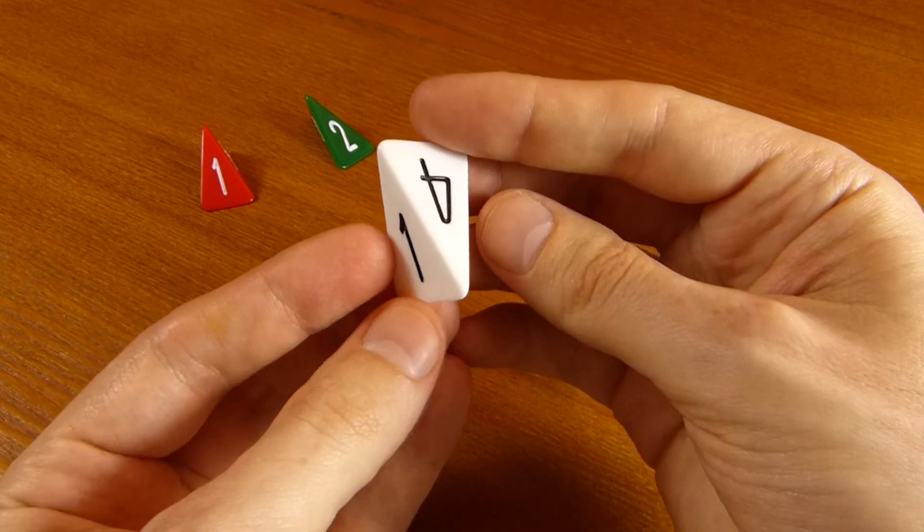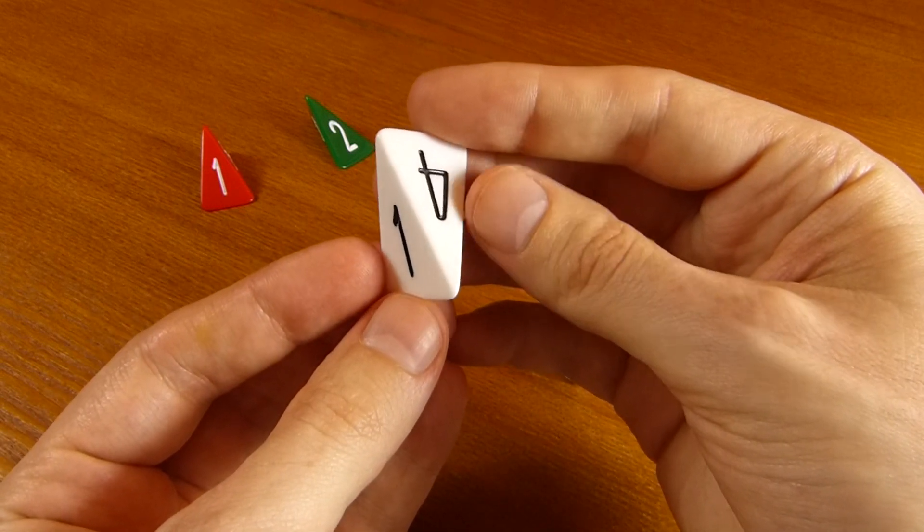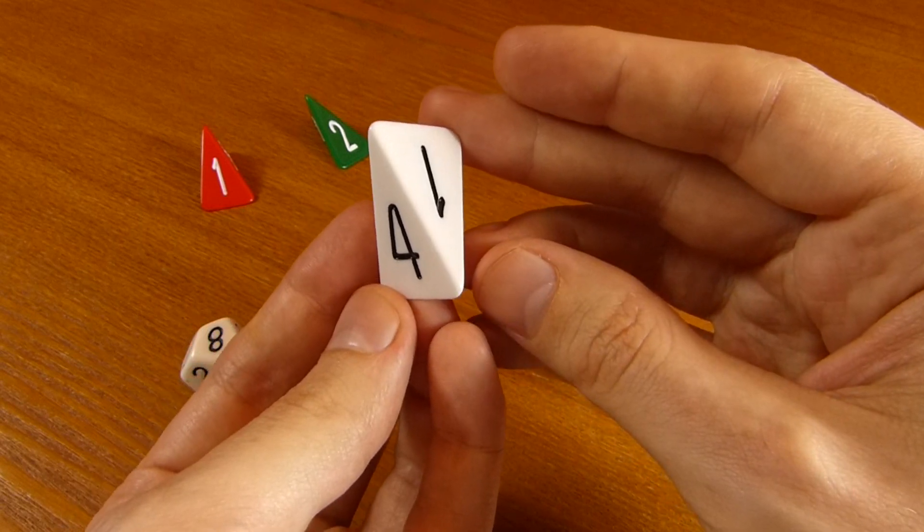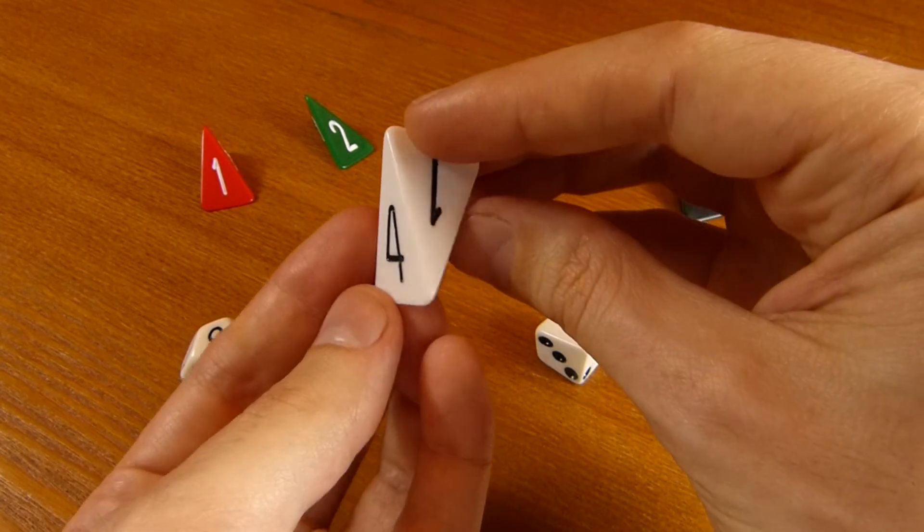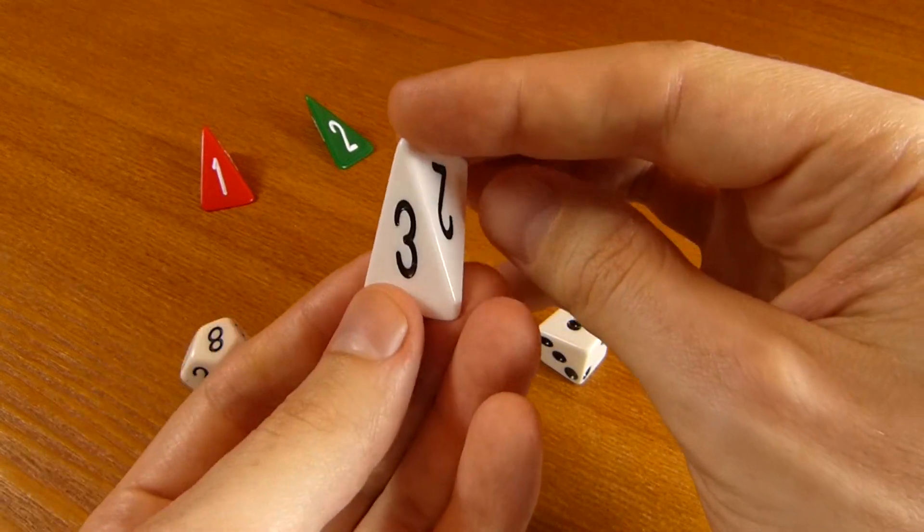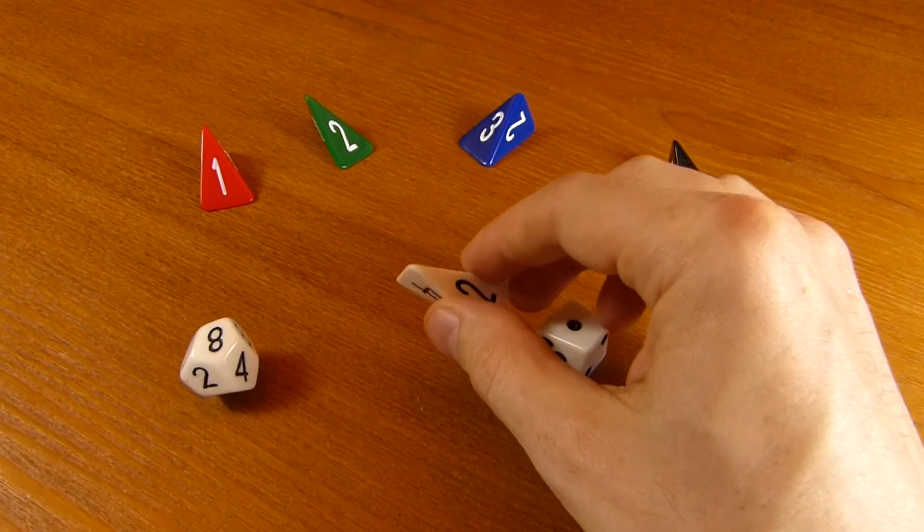So you can see that the one and the four are the same if you rotate it around here. They show up in exactly the same place as each other did. They're the same shape and the same thing on the back. The two and the three are also the same as the one and the four. So it's a fair die.